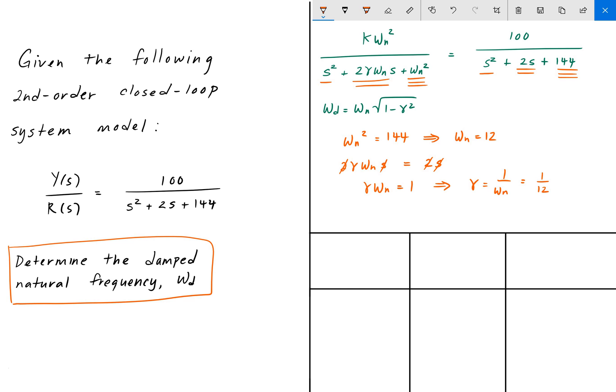Now that we have gamma and omega n, we can plug it into our equation for omega d and solve. Omega d is going to be 12 times the square root of 1 minus (1/12) squared, and that is equal to 11.96 radians per second. That is our answer.